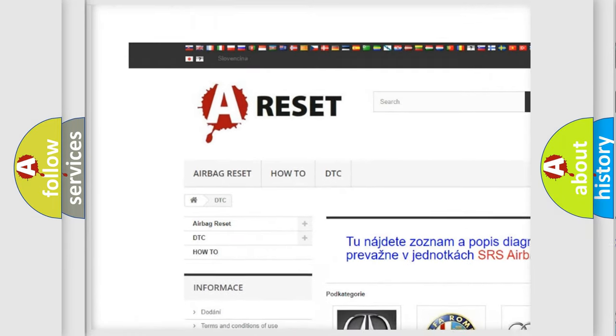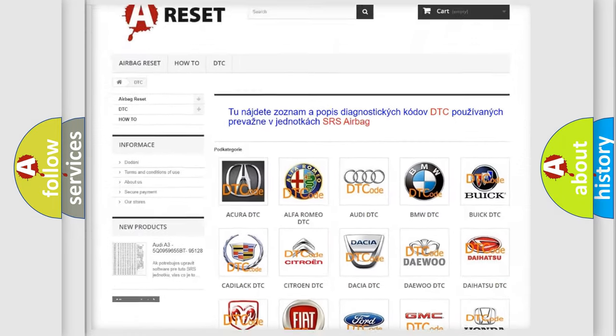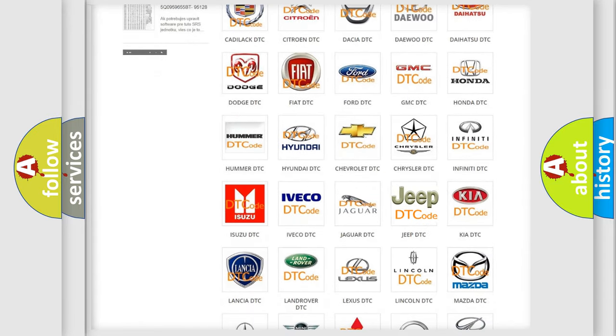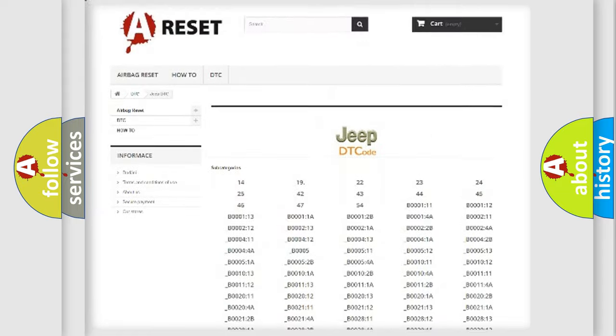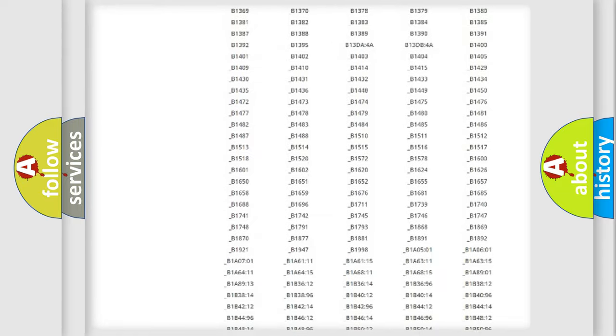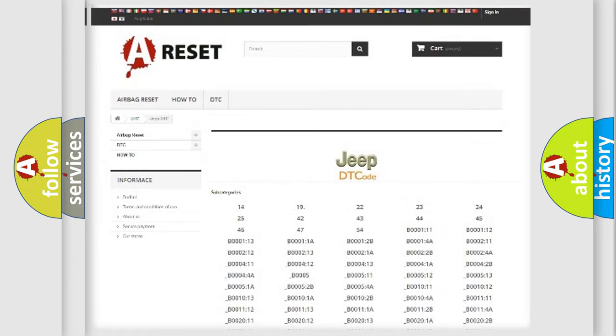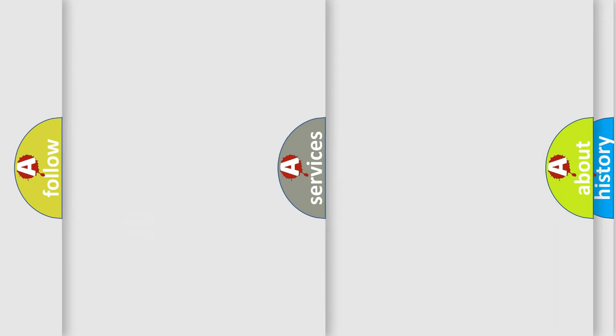Our website airbagreset.sk produces useful videos for you. You do not have to go through the OBD2 protocol anymore to know how to troubleshoot any car breakdown. You will find all the diagnostic codes that can be diagnosed in Jeep vehicles, and many other useful things.